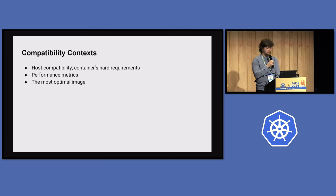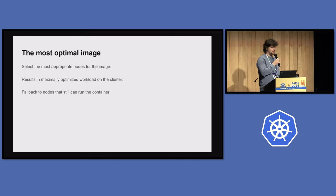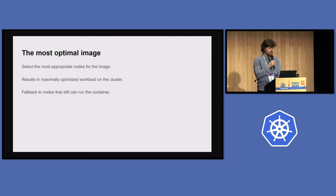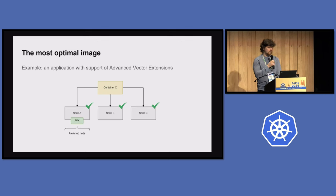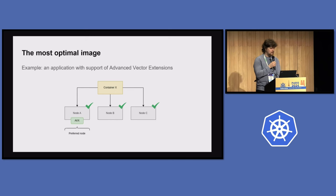The third compatibility context is the most optimal image. This is about selecting the most appropriate nodes for the image, resulting in a maximally optimized workload on the cluster. If that's not possible, fall back to nodes that can still run the container. For example, if a CPU supports Advanced Vector Extensions (AVX), you want the container scheduled on a node with AVX support. But if the container can still work without AVX, you fall back to nodes B and C. That is the third compatibility context.